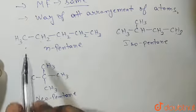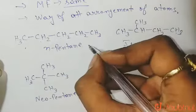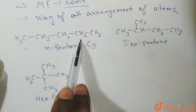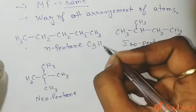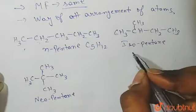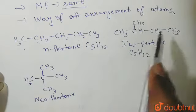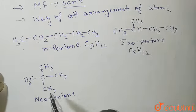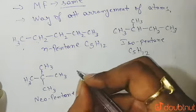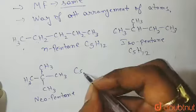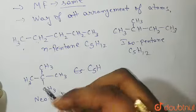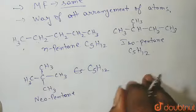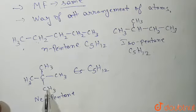Now let's verify the molecular formulas. For N-pentane: 5 carbons and 12 hydrogens — C5H12. Similarly, isopentane also gives C5H12 (9 + 3 = 12 hydrogens). For neopentane: 1 central carbon plus 4 CH3 groups, giving 4 × 3 = 12 hydrogens, so C5H12 again. Since all three share the same molecular formula, they are confirmed isomers of each other.